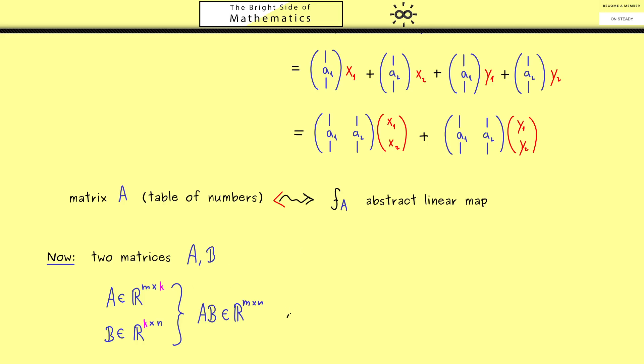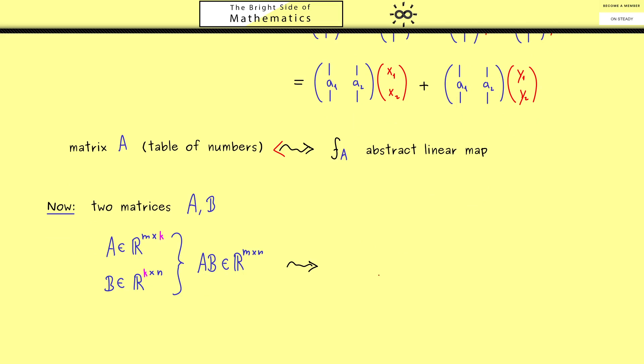And now as before, we can translate both matrices into 2 linear abstract maps. So you see, we have f_A and f_B. And maybe, let's visualize this with sets. So we have R^n on the left hand side and R^m on the right hand side. And in the middle R^k. And then you see, we have 2 maps, f_A and f_B. And indeed, by this picture, you immediately see, we can form the composition of both maps. Hence, we have the map f_A after f_B. And as always, you know, the composition of 2 maps is denoted with this small circle.